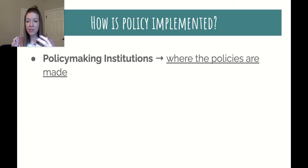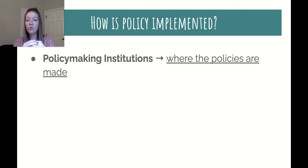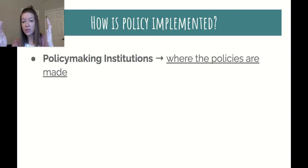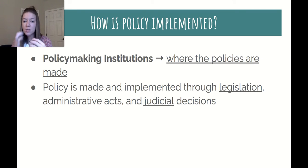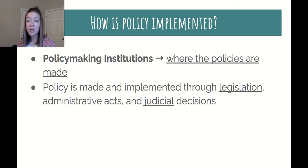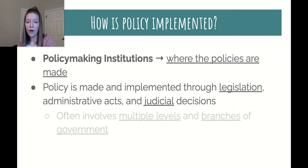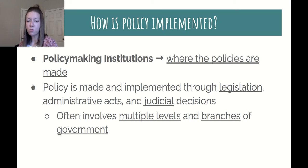How policy is implemented, created, and enforced is through the policymaking institutions — where policies are actually made. You can look at it by level of government (federal, state, or local) and also by what branch. Policy is made usually through three different ways: the most common is legislation, but it could also be administrative acts such as executive orders, rules by the bureaucracy, and judicial decisions. This often involves multiple levels and branches of government.